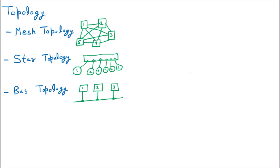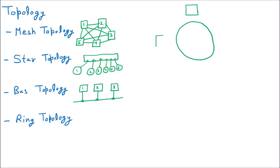Now we are discussing the next topology, that is the ring topology. As the name signifies, there is a ring through which all the computers are connected. Making a diagram: let us suppose there is a ring and with this ring all the computers are connected. In technical terms, computers are called terminals. Let us suppose four terminals are connected, named C1, C2, C3, and C4. So these are the four computers or terminals connected to a ring — this is the ring topology.